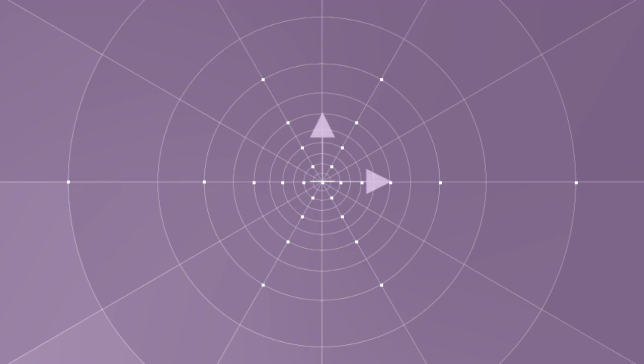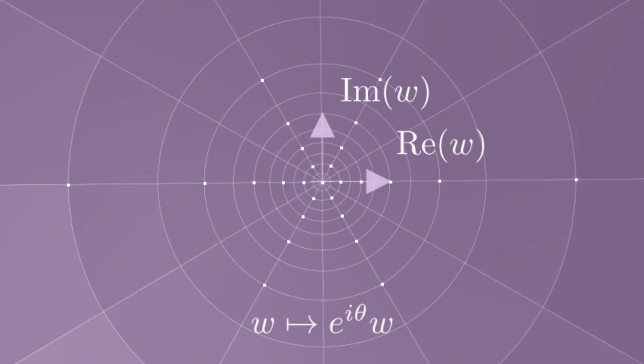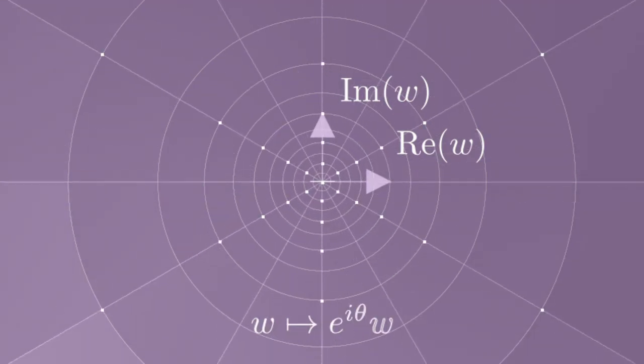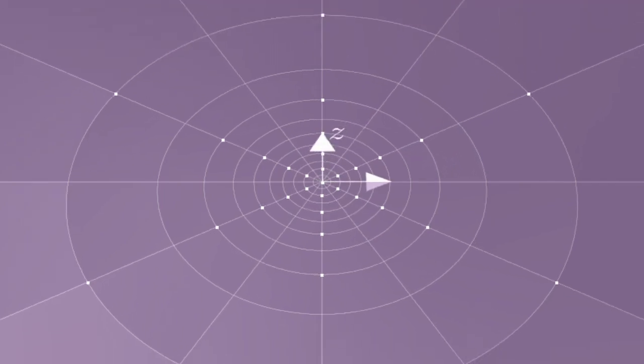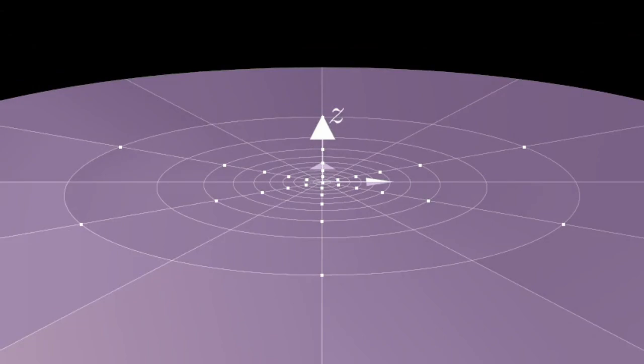If you're familiar with complex transformations, if we take w to be our complex coordinate, this can be written as the transformation w maps to e to the i theta w. That is, each point gets multiplied by a phase. If you're not familiar with complex transformations, don't worry. A lot of the transformations we'll see can just be understood as 2D transformations. For example, this is just a rotation of the 2D plane.